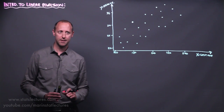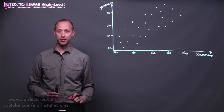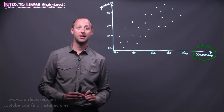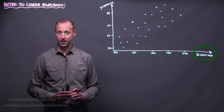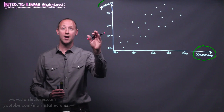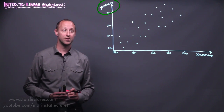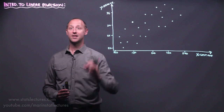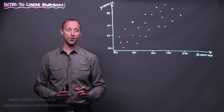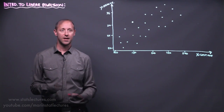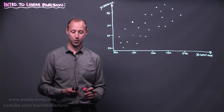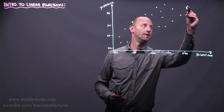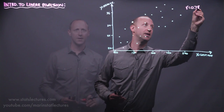To work through the concepts we're going to work with this example here — the relationship between x being the gestational age of a baby and y being their head circumference measured in centimeters. This data looks at gestational age and head circumference for 39 low birth weight babies. If we were to calculate Pearson's correlation for this data, we'd find that it comes out to be 0.78.